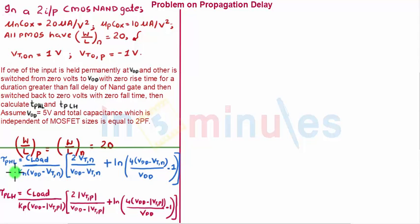And the one which is written in blue is a formula for propagation delay low to high, and we have all the terms with us. So let's start substituting. C_load is given as 2 picofarad.